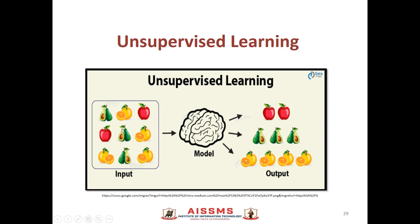In this diagram, we can see that this particular model is grouping these images into three categories. This data is actually unlabeled. This system doesn't know that the particular image of Apple belongs to the Apple category, that this image belongs to the Avocado category, and that this particular yellow fruit image belongs to the lime category.